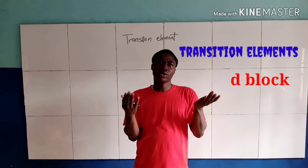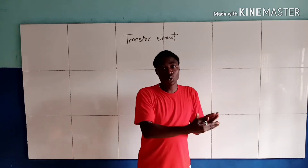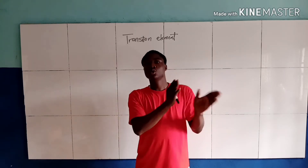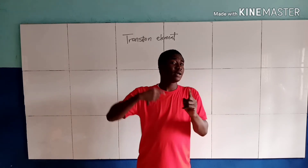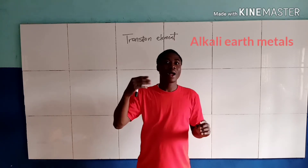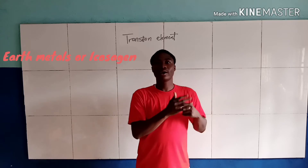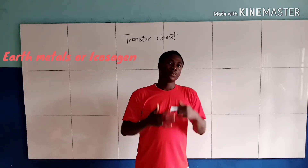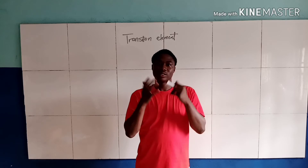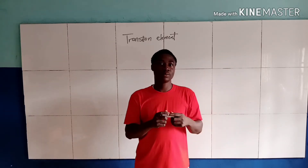Transition elements are found between group 2 and group 3 of the periodic table, whereby group 2 elements are called the alkali earth metals, while group 3 elements are called earth metals, or you say icosagy. You can see they are found between group 2 and group 3 of the periodic table.